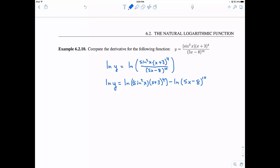But we don't stop there. Now we could use another property of logarithms that says we have the product of two things, let's break that apart. And we break that apart into addition. So we have sine squared of x, and then the natural log of x plus 3 raised to the fourth. And then that subtraction part, natural log of 5x minus 8 all raised to the tenth.